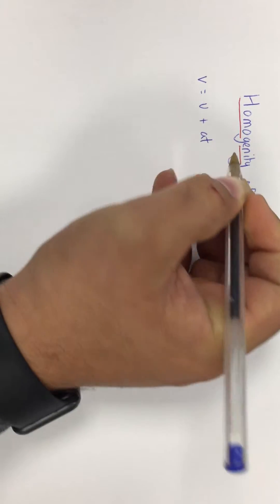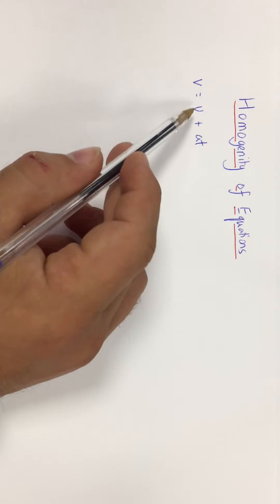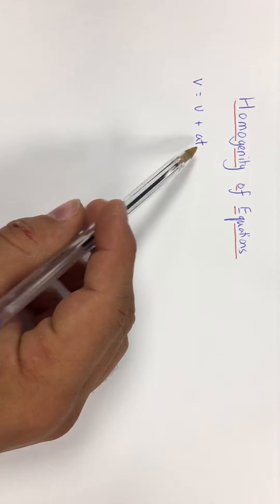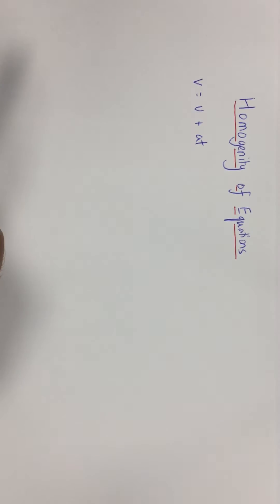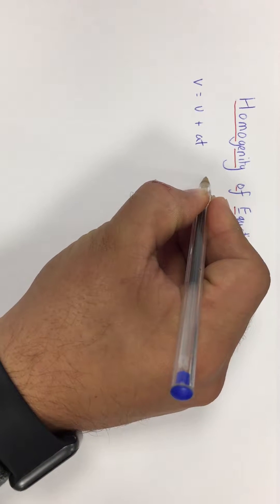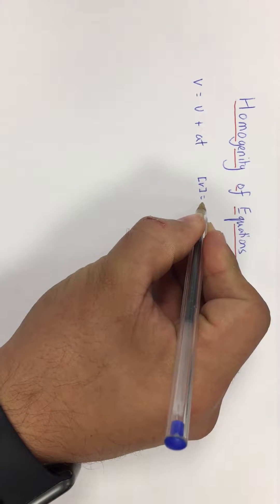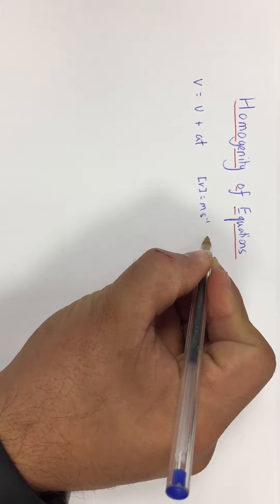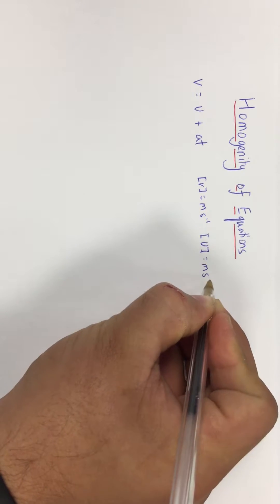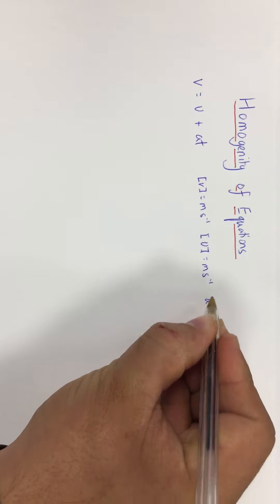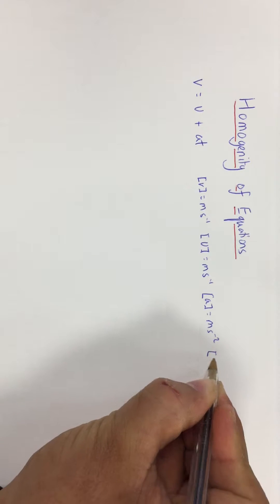Take v = u + at, which is one of our SUVAT equations. We want to show that the units on the left side and the units on the right side are the same. We start by writing the units of each quantity: the unit of velocity is metres per second (m s⁻¹), the units of initial velocity are m s⁻¹, the units of acceleration are m s⁻², and the unit of time is seconds.